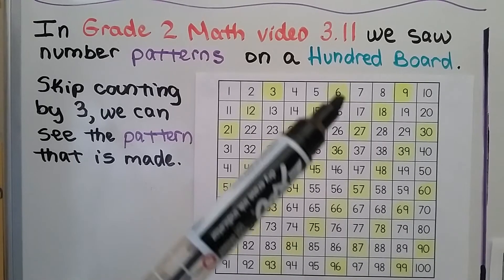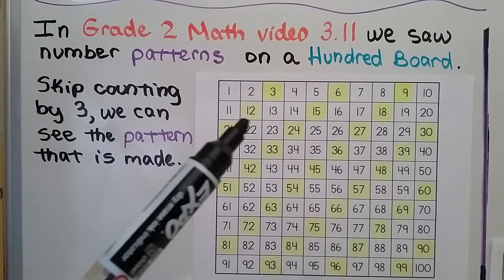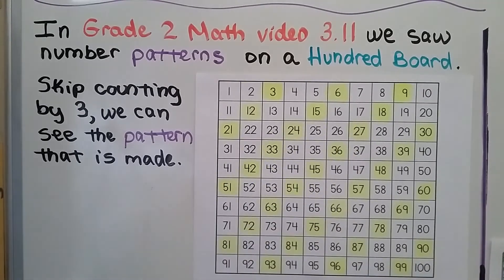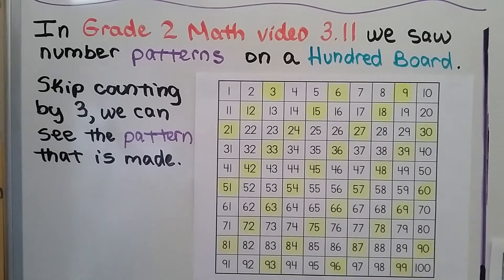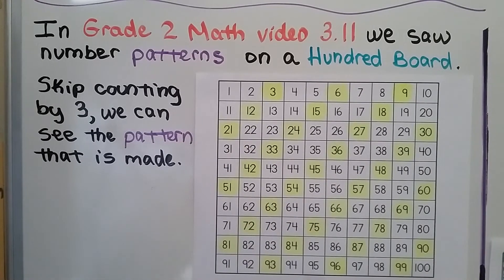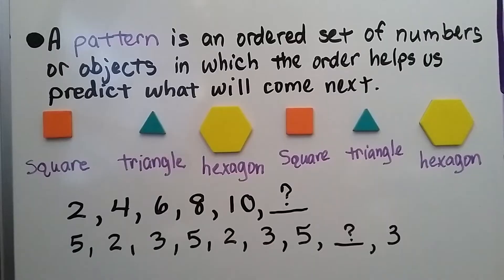We have 3, 6, 9, 12, 15, 18 — it's skip counting by 3's. Look at the pattern of the yellow squares; they're going in a diagonal. A pattern is an ordered set of numbers or objects in which the order helps us predict what will come next.